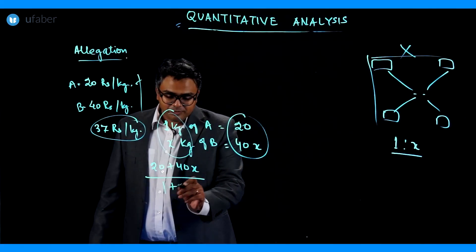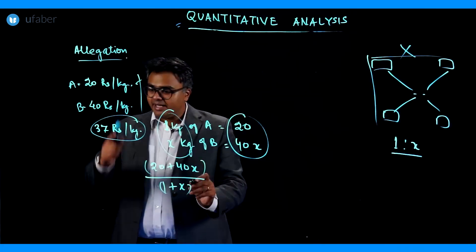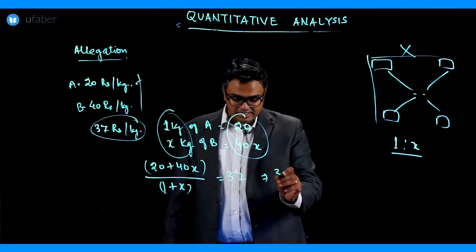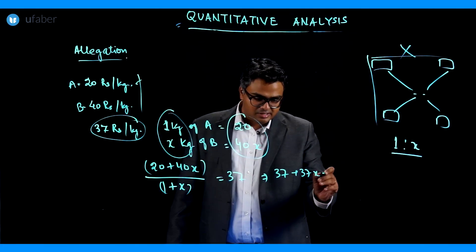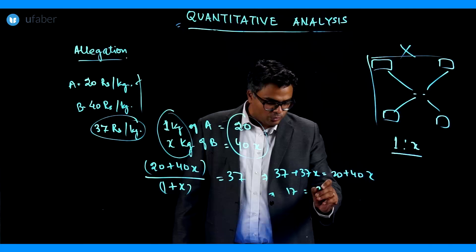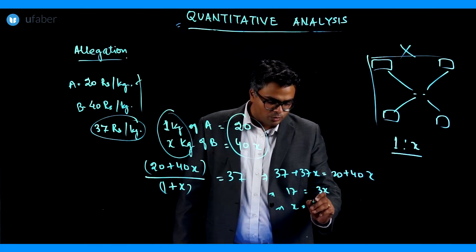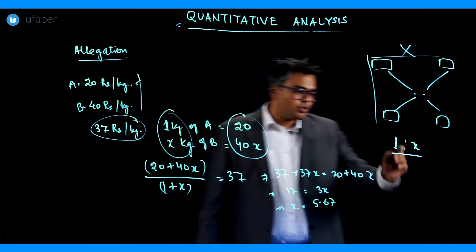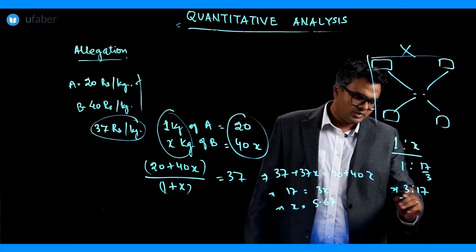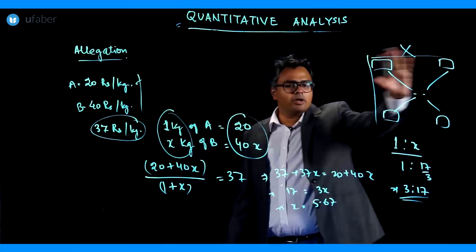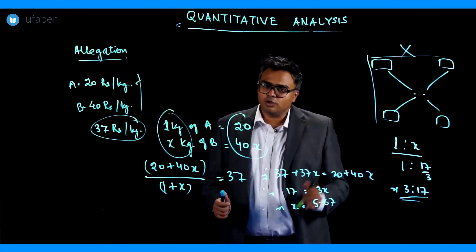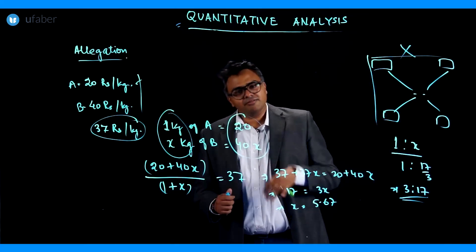So total cost divided by total weight gives the rate, which equals 37. This implies 37(1 + x) = 20 + 40x, which gives 37 + 37x = 20 + 40x, so 17 = 3x, meaning x = 17/3. The ratio is 1 to 17/3, or equivalently 3 to 17. No need for diagrams — a simple linear equation solves the question.